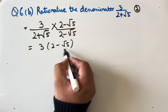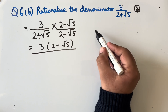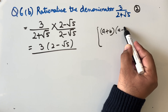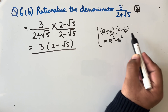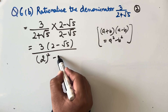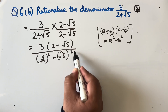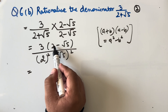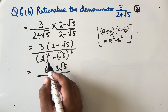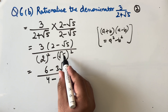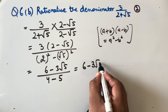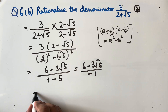In the denominator, we apply the formula (a + b)(a − b) = a² − b², giving 2² − (√5)². Expanding: the numerator is 6 − 3√5, and the denominator is 4 − 5 = −1. So we get 6 − 3√5 upon −1.